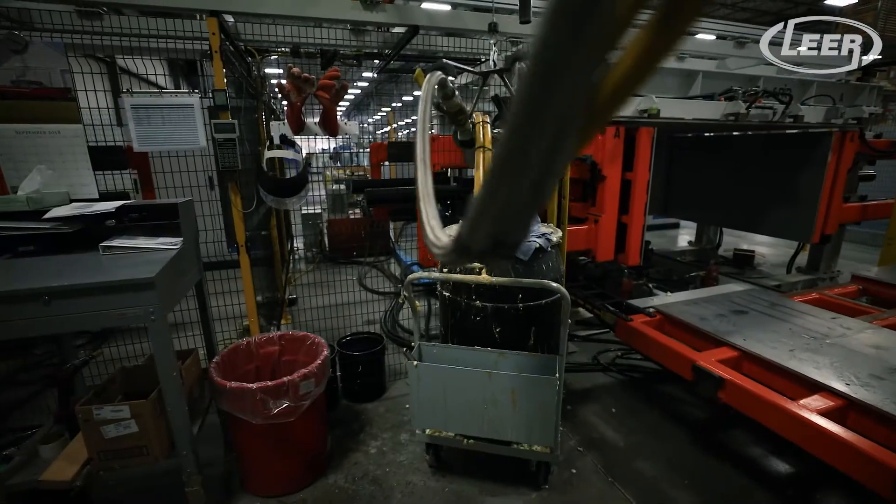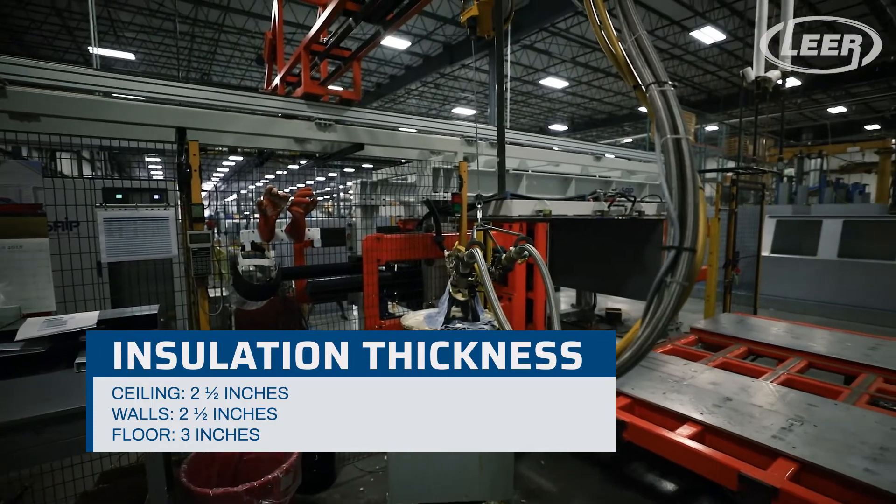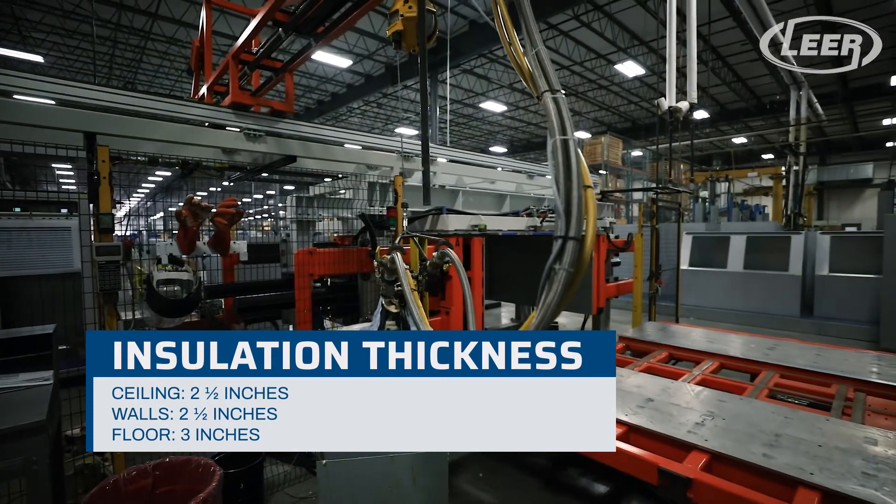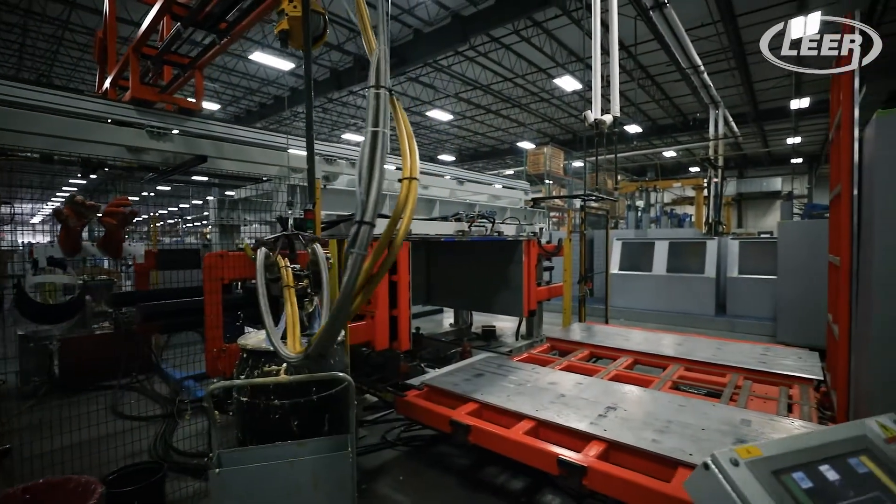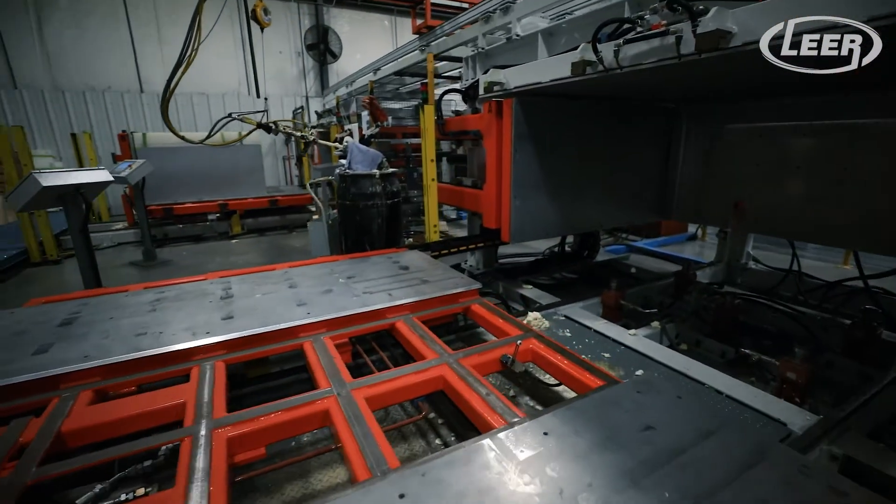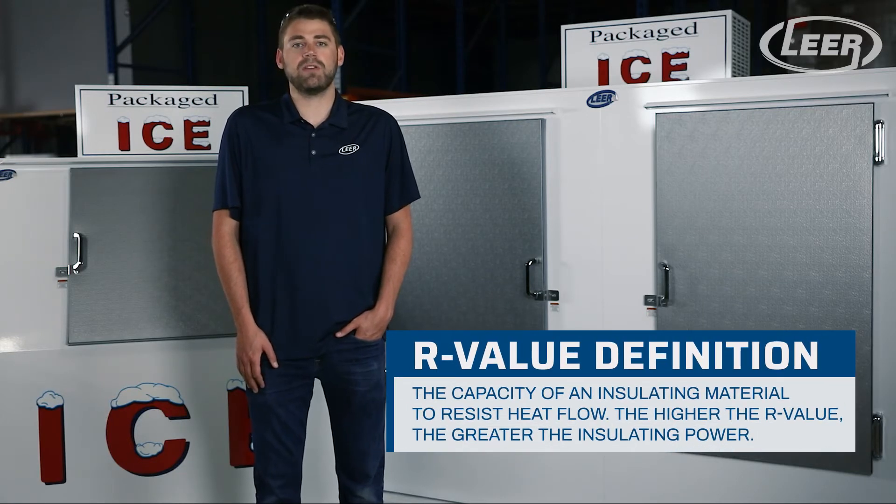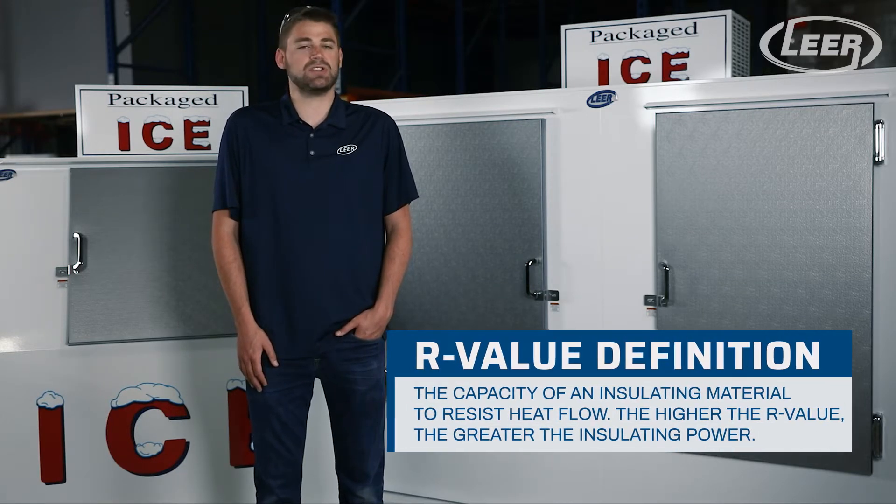In between the two layers contains the foam insulation. There's two and a half inches of insulation in the ceiling and walls and three inches of insulation in the floor. The insulation is a CFC-free foamed in place polyurethane. This ensures a high R-value, or in other words reduces heat transfer into the unit.